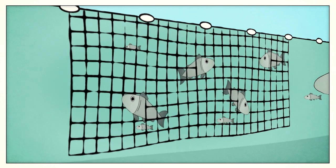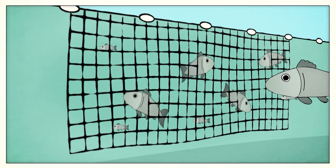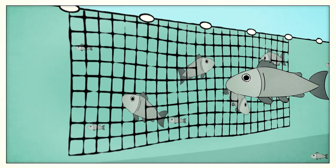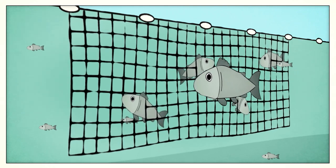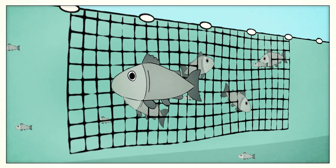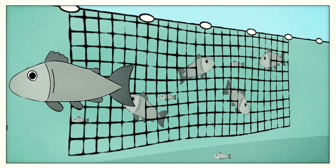Mesh size regulations make gill net fisheries even more selective by targeting returning adult salmon that tend to be about the same size. Non-targeted fish that are too big will bump into the net and swim around it. Those that are too small simply swim through the net.